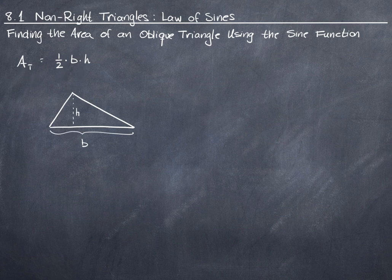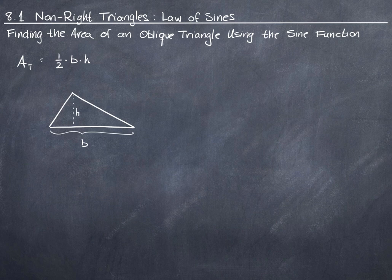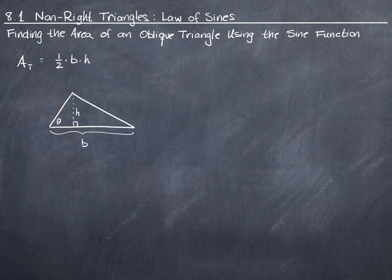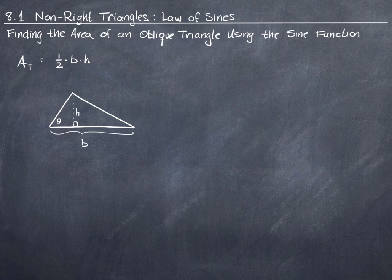What if we don't know the height of the triangle? What if instead we know an angle, like this one right here? I'm going to call it theta. Remember that when we drop a vertical, we often do so so that it creates a right angle with the opposite side.